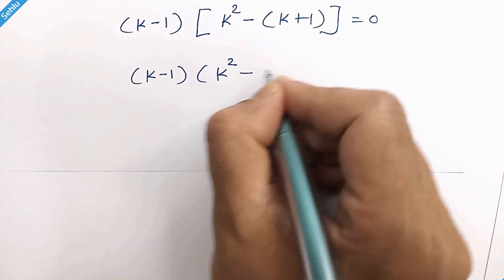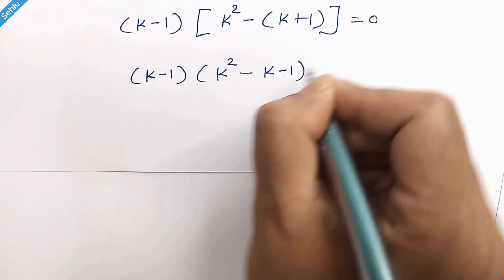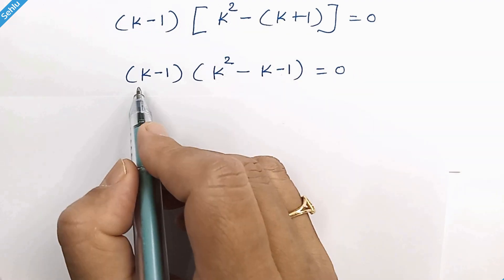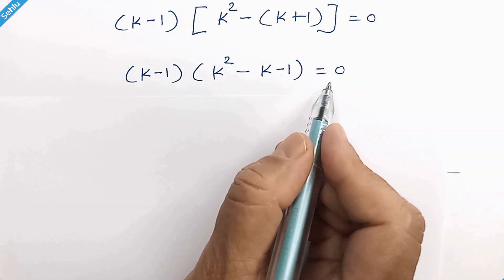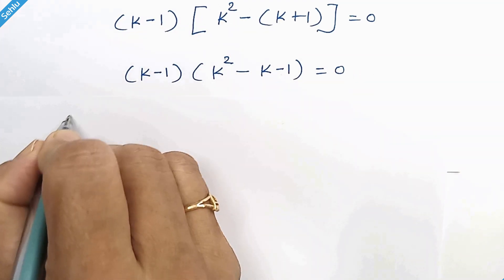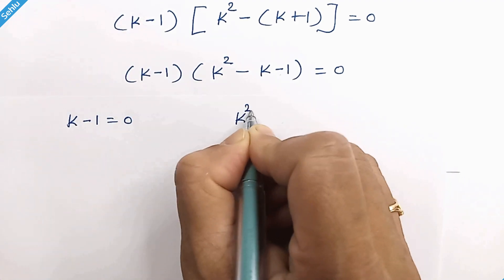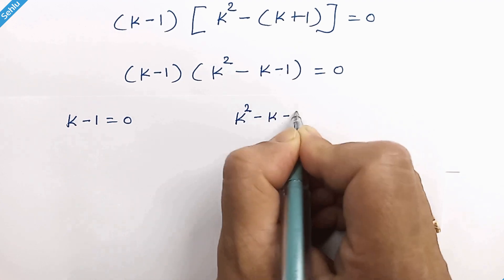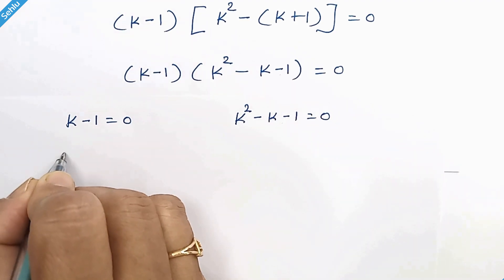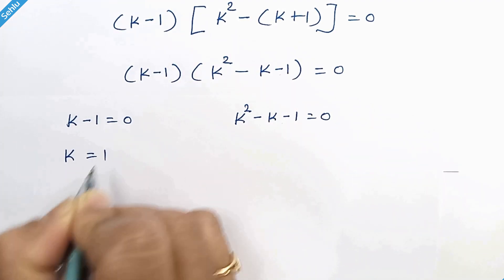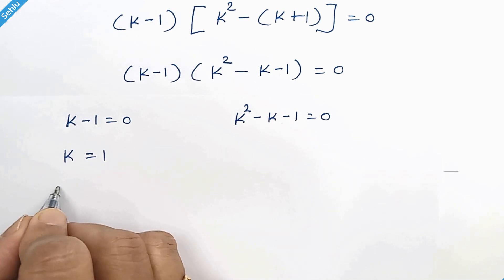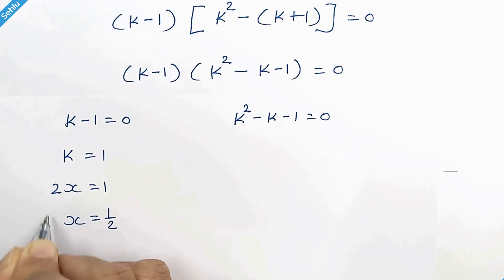If you open this bracket it will be k minus 1. If you open this bracket it will be k square minus k minus 1. So we can compare both these brackets with 0. Here we have k minus 1 equals 0 and k square minus k minus 1 equals 0. So here we have k is equal to 1. k was taken for 2x, so x is equal to 1 over 2.